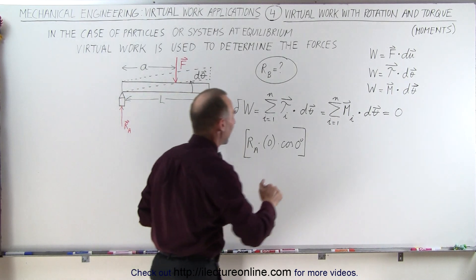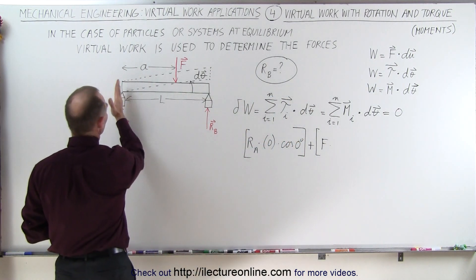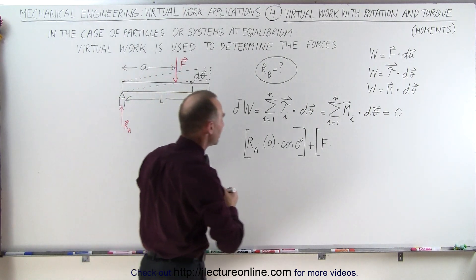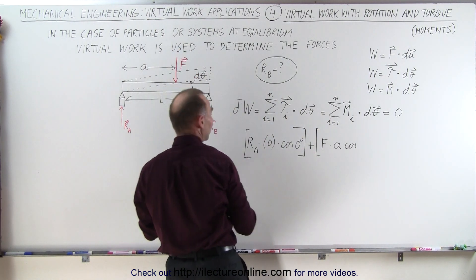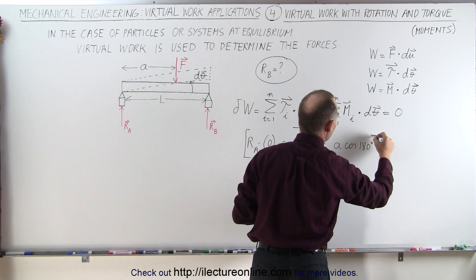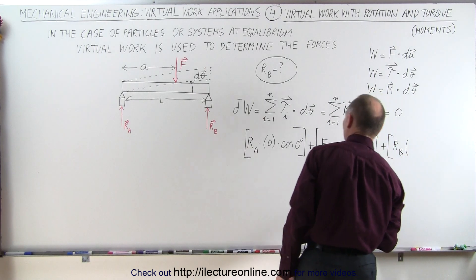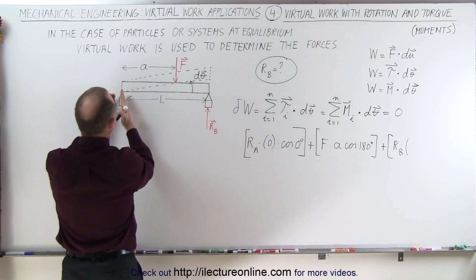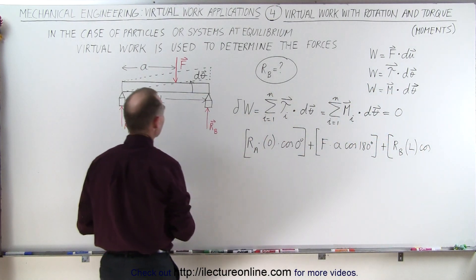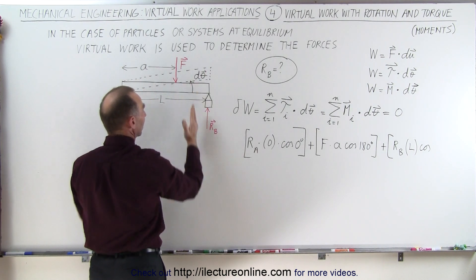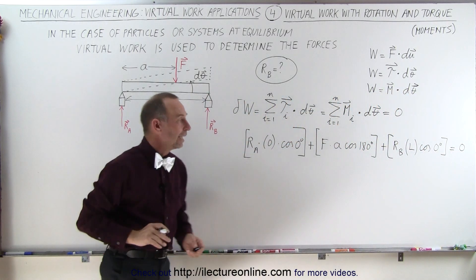Next we add the force times the distance from the point of rotation to where the force is acting — the perpendicular distance, which is a — times the cosine of the angle between the direction of the force and the direction of the angular displacement, which is 180 degrees. And we add to that the reactionary force at B multiplied times the perpendicular distance from the point of rotation to where it acts, which is L, times the cosine of the angle. Since both are acting upward, this is the cosine of zero degrees. That must equal zero because the system is at equilibrium.